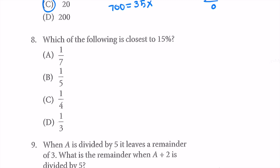Question 8: which of the following is closest to 15%? The options are 1/7, 1/5, 1/4, and 1/3. To convert a fraction into a percentage, we multiply the fraction by 100. For 1/5: 1/5 times 100 equals 100/5, which equals 20%. So 1/5 is 20%.